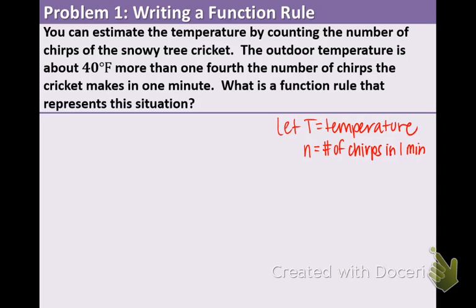We need to look for the given information. What is important in this situation? There are a couple key phrases. The outdoor temperature is about 40 degrees more than one-fourth of the number of chirps that are made in one minute. So what we're going to do now is write a graphic organizer that presents this information. Our graphic organizer is going to say that temperature is 40 degrees more than one-fourth of the number of chirps in one minute.